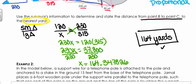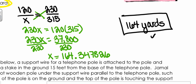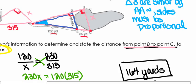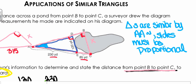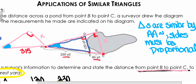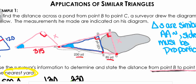Hopefully you can see from that example how the surveyor could find that distance across the pond, which would be really difficult to measure directly by laying down a tape measure because of the pond.